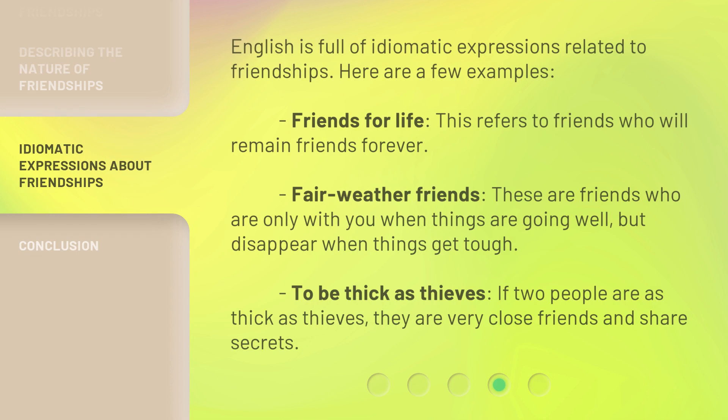English is full of idiomatic expressions related to friendships. Here are a few examples. 'Friends for life' refers to friends who will remain friends forever. 'Fair weather friends' are friends who are only with you when things are going well, but disappear when things get tough. 'To be thick as thieves' — if two people are thick as thieves, they are very close friends and share secrets.